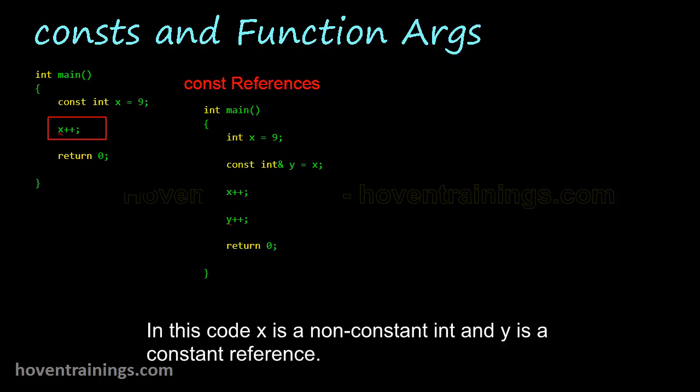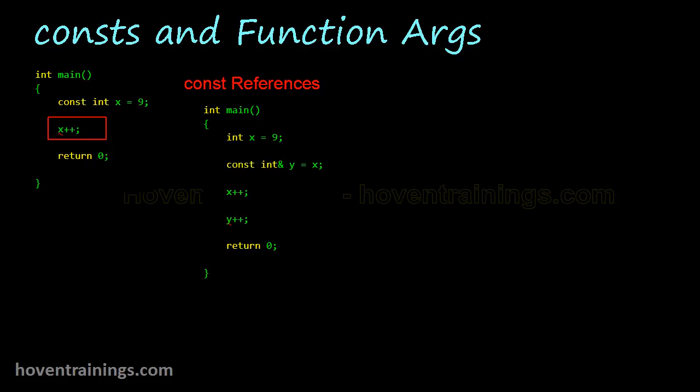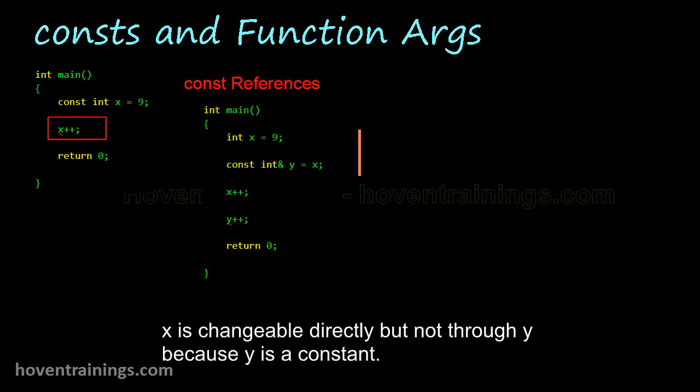In this code, x is a non-constant int and y is a constant reference. x is changeable directly but not through y, because y is a constant.